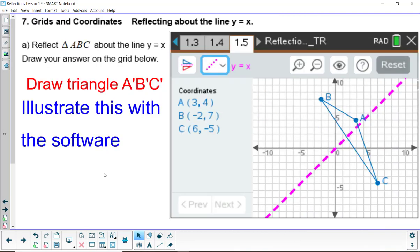Moving on to number 7A, we want you to reflect that triangle about the line y equals x. If you want to pause it now, you can or else you can go right to the software and reflect about that line and then answer 7A, drawing in the figure and listing the coordinates of the image triangle.